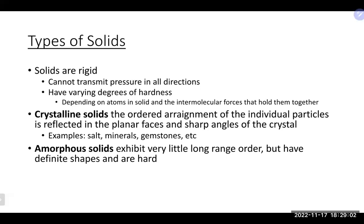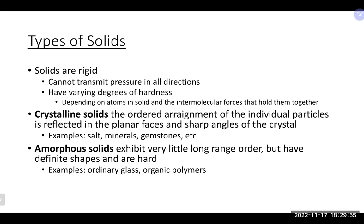Now let's talk about solids. Solids are rigid and have varying degrees of hardness. Crystalline solids — like ionic compounds — have a very ordered, repeating pattern. This order is so regular that you can take a small piece and rebuild the entire structure from it. Amorphous solids, like glass and many organic polymers, exhibit much less long-range order.